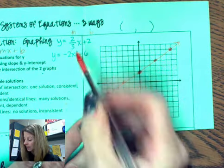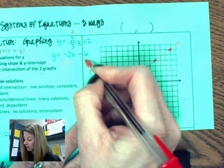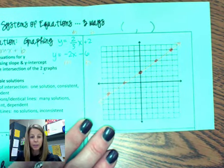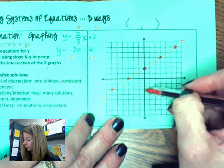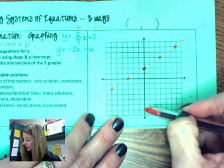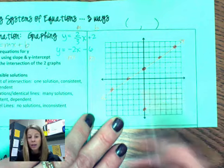Second one, the m is negative two, and the b is negative six. So begin with the b. I'm going to go down here to negative six. One, two, three, four, five, six.